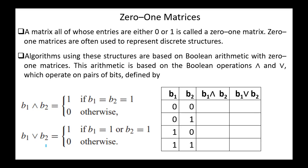Hello, everyone. Today, our topic in the discrete math course is 0-1 matrices. A matrix where all entries are either 0 or 1 is called a 0-1 matrix.